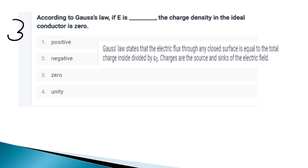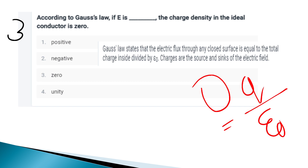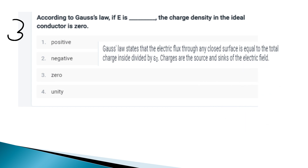According to Gauss's law, if the electric field inside is zero, the charge density in an ideal conductor is zero. Gauss's law states that the electric flux through any closed surface is equal to the total charge inside divided by epsilon zero. Since the field inside a conductor is zero, the charge density inside that ideal conductor is zero.